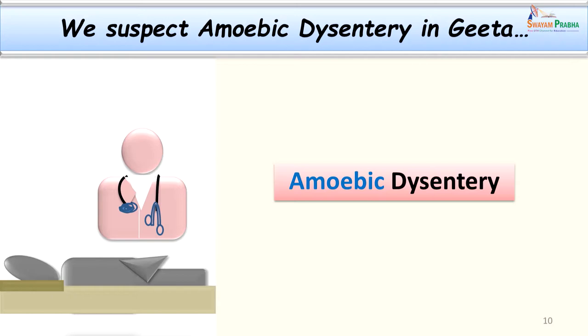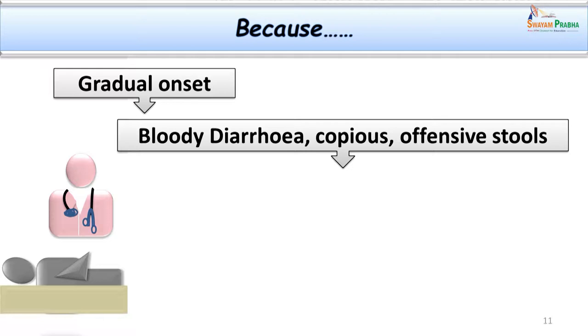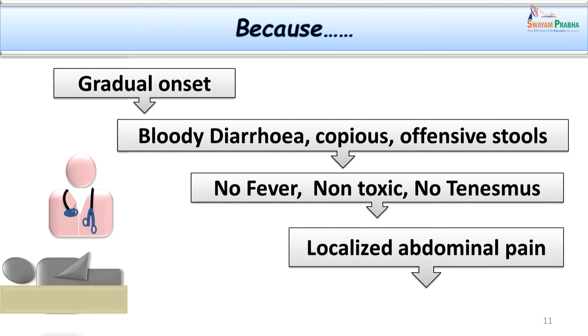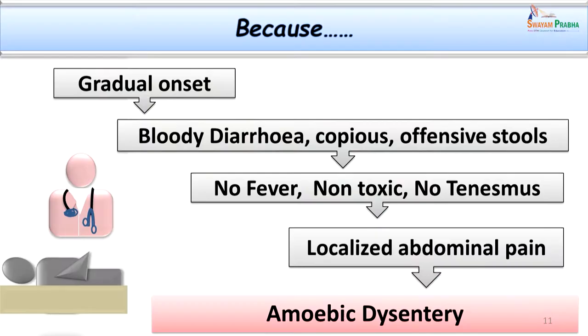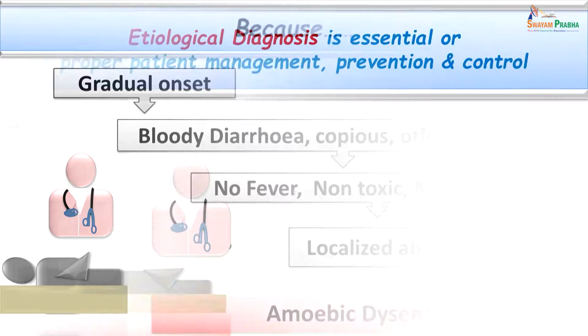In Geeta's case we suspect a parasitic origin, which is why we call it amoebic dysentery. We suspect this because onset was gradual, with bloody diarrhea, copious and offensive stools, no fever, no toxicity, and no tenesmus. There was also localized abdominal pain. These clinical findings, along with gross laboratory examination findings, help us classify it as amoebic dysentery.